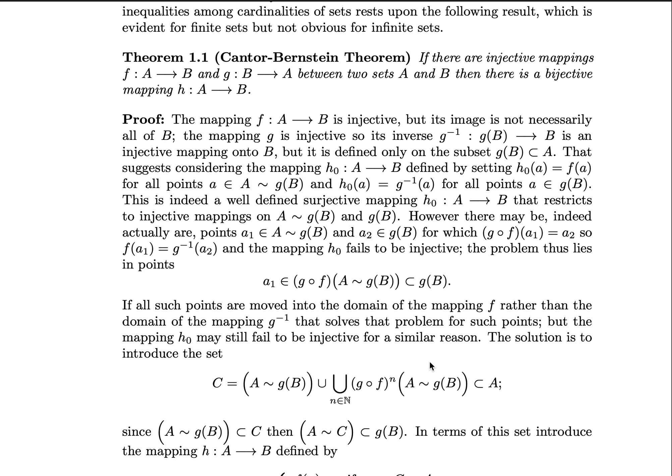Additionally, we have that g is injective. So its inverse, g inverse, which is well defined as we've discussed, injective maps have pretty natural bijections. g of B set to B is an injective mapping onto B, but is only defined on the subset g(B) as a subset of A, namely the image of the set B under g inside of A.